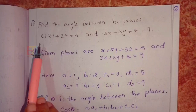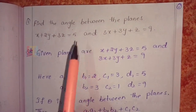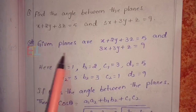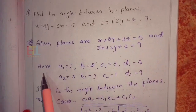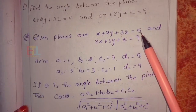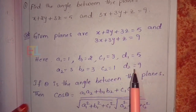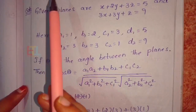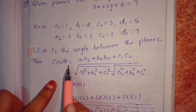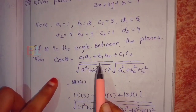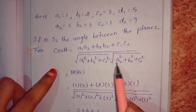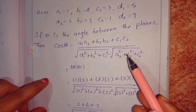Next problem: find the angle between the planes x plus 2y plus 3z equal to 5 and x equal to 9. First, we identify the given planes. For plane 1: a=1, b=2, c=3, d=5. For plane 2: the coefficients a2, b2, c2, d2 are identified accordingly. If theta is the angle between the planes, then cos theta equals (a1·a2 + b1·b2 + c1·c2) divided by (root of (a1²+b1²+c1²) times root of (a2²+b2²+c2²)).